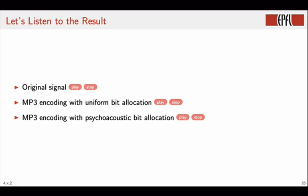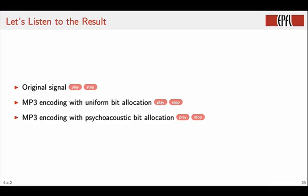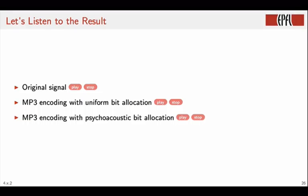Now let's listen to the same signal encoded with uniform bit allocation. And finally, this is the result of a full-fledged MP3 implementation with psychoacoustically-based bit allocation. Of course, in both the uniform and non-uniform bit allocation encoding schemes, the target bit rate was very low in order to exacerbate the effects of quantization. But the principle holds for all bit rates.